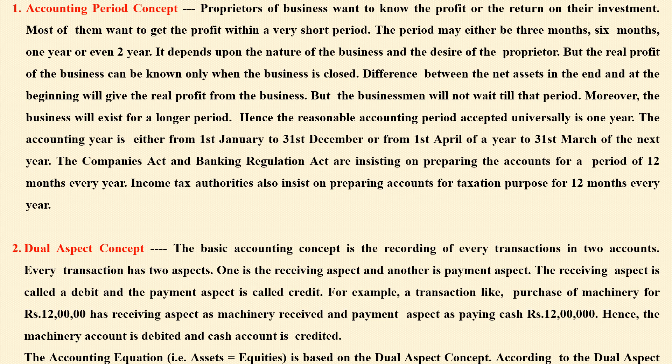For individual proprietorship, the owner or the partner, and in a company, the shareholders, want to know the profit earned and the status of the financial condition — that is total assets and liabilities. They want to know this. The Income Tax Authority also insists, and the Companies Act and Bank Regulation Act are also insisting for that.